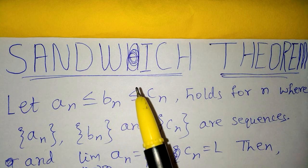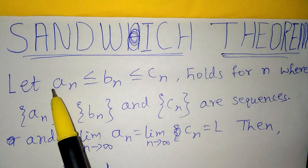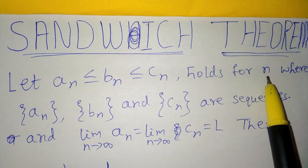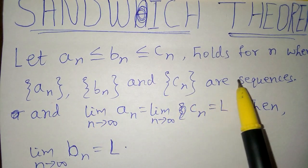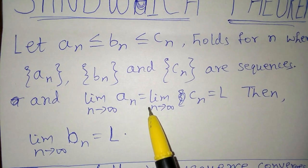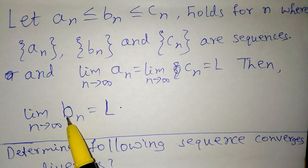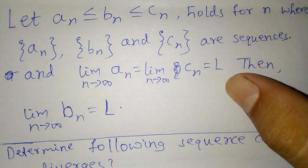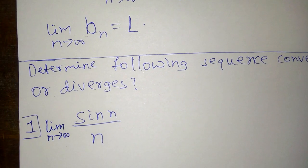In this video we can see the application of the Sandwich Theorem. The theorem states: if a_n ≤ b_n ≤ c_n holds for all n, where a_n, b_n, c_n are sequences, and the limit as n tends to infinity of a_n equals the limit of c_n equals L, then the limit of b_n is also equal to L.